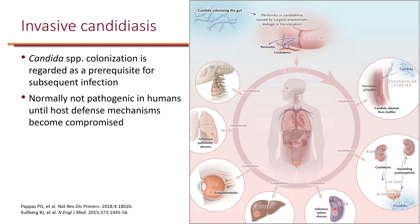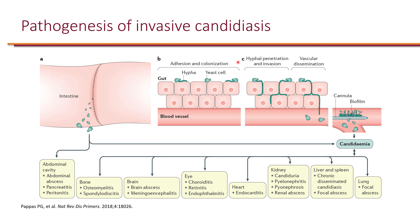For example, it can infect the spleen and cause abscess. It can infect the liver and cause abscess. The eyes can often be involved — it can cause some serious infections in the eye. Of course, the lungs can be involved — you can have abscess in the lung. And of course, osteomyelitis.